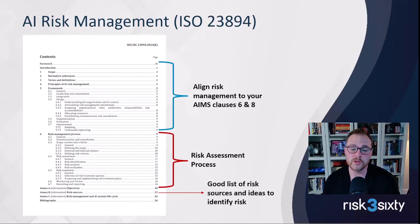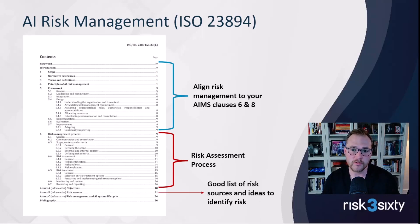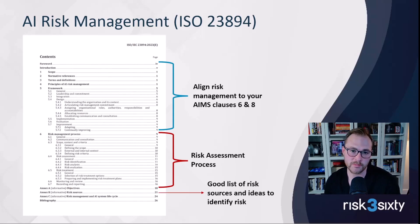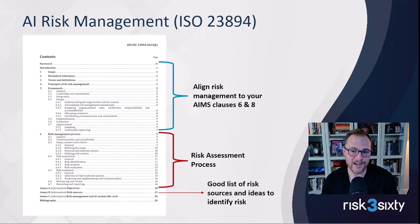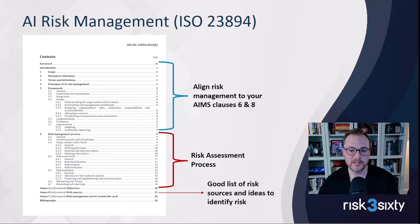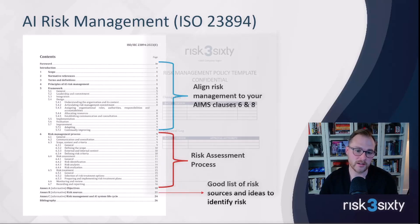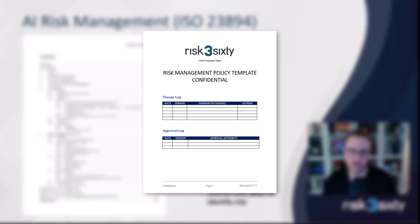Another core component of ISO 42001 is the AI risk management process, and there's actually a whole other framework for AI risk management: ISO 23894. In ISO 42001, when they talk about risk management, you can reference this framework to really think deeply about it. The first section tells you to align your risk management program with your AIMS, especially clauses six through eight. The next section covers the risk assessment process — how you uncover, prioritize, evaluate, and act on risks.